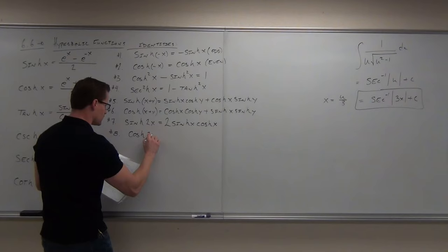Let's do secant. The derivative of regular secant is secant tangent. The derivative of hyperbolic secant is hyperbolic secant times hyperbolic tangent, but it's negative. Notice how some of the signs change. The integral of hyperbolic secant hyperbolic tangent is negative hyperbolic secant.